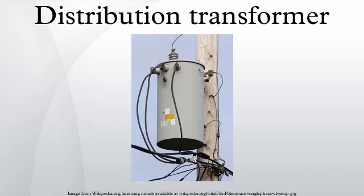In European countries using its system, the secondary is often the three-phase 400Y/230 system. There are three 230V secondary windings, each receiving power from a primary winding attached to one of the primary phases. One end of each secondary winding is connected to a neutral wire, which is grounded. The other end of the three secondary windings, along with the neutral, are brought down the service drop to the service panel. 230V loads are connected between any of the three-phase wires and the neutral.